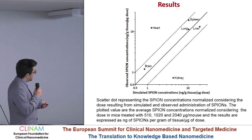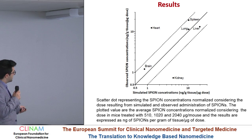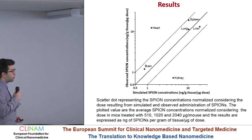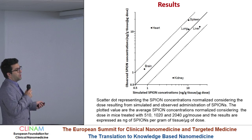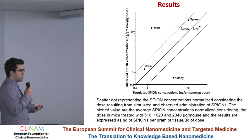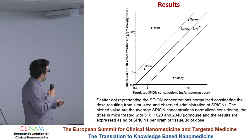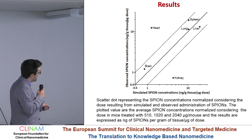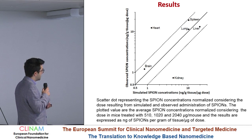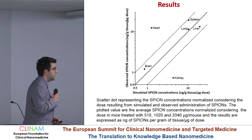To give a better representation, we normalized the concentration per dose. What you have here is the simulated SPION concentration and the observed SPION concentration normalized per microgram of dose. If we have a perfect fit of our model, the points would fall on the line. Obviously we don't have a perfect fit, but we have quite good prediction for four organs — spleen, lung, liver, and brain — and we have an under-prediction for heart and quite high over-prediction for the kidney.